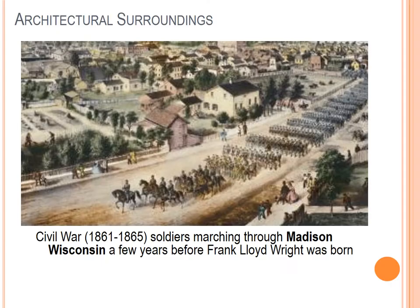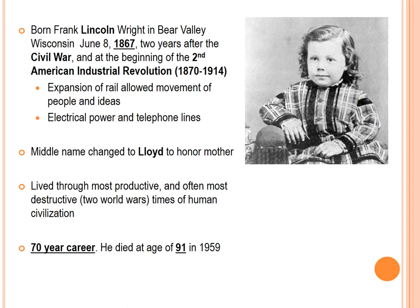Frank Lloyd Wright was born right after the Civil War in a northern state, not part of the Confederacy — in Wisconsin, in the Bear Valley. This was the second industrial revolution, the main technology industrial revolution that people think of. Expansion of the rail allowed movement of people and ideas, along with electrical power and telephone lines.